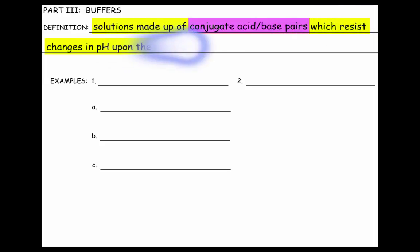Now let's apply the definition of conjugate acid-base pair and use it in a chemical system. And those chemical systems are called buffers. Definition of buffers: solutions made up of conjugate acid-base pairs which resist changes in pH upon the addition of small amounts of an acid or base.